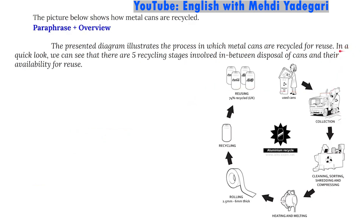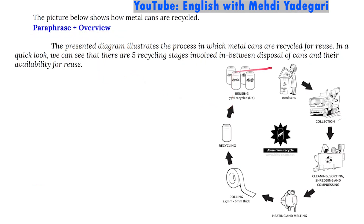This is a general trend or an overview: 'In a quick look, we can see that there are five recycling stages involved in between disposal of cans and their availability for reuse.' Very simply, we have talked about how many stages there are. There are seven stages overall, and I've written about the five stages in between — in which the cans go through before they're able to be reused. The overview can be about how many stages there are overall or in between the first and the last part.